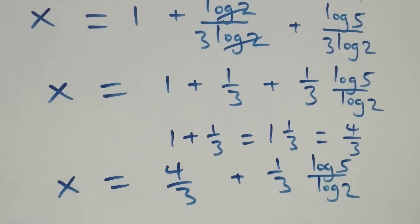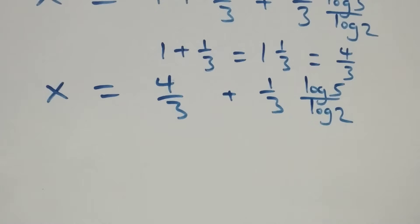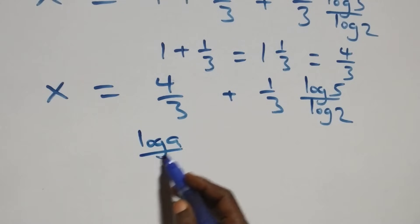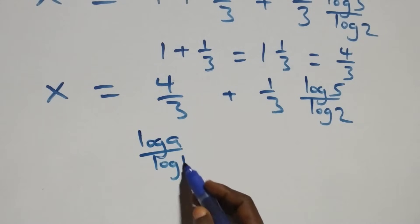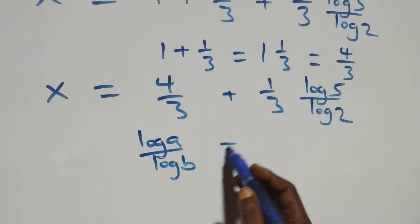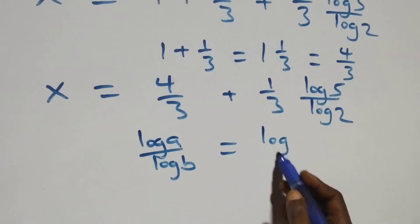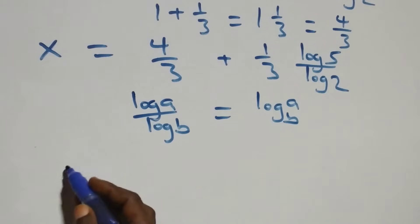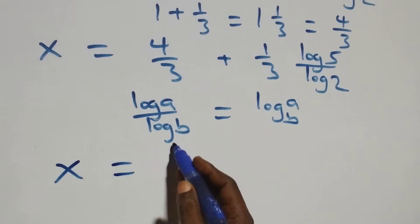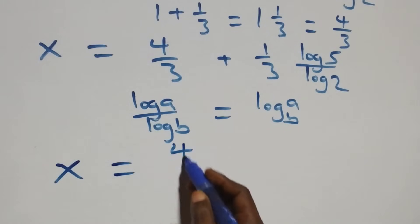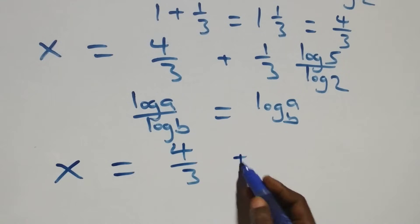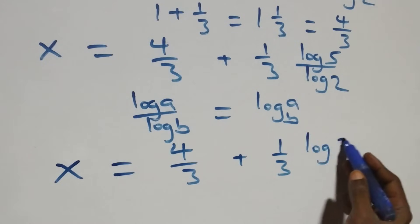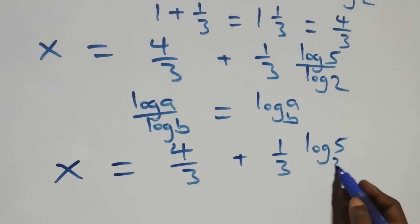Applying the change of base formula, log a over log b can be written as log a to base b. Therefore x equals 4 over 3, plus 1 over 3 times log 5 base 2. This can also be written as x equals 4 plus log 5 base 2, all over 3.